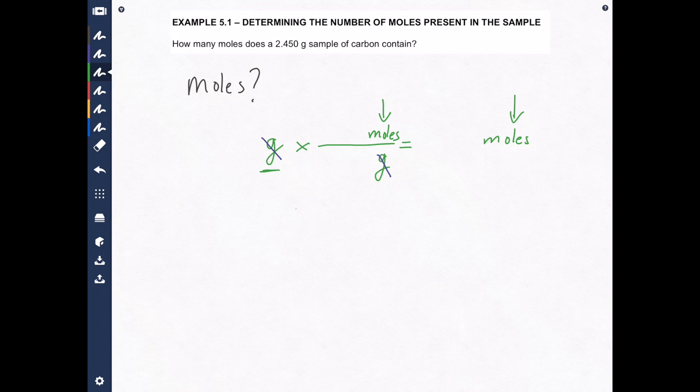Now the question always is, what numbers go here and what numbers go here and up here. Those are always the questions people want to know. Well I always say, let the units tell you what to do. Don't worry about anything else but units. They will always guide you in the right direction. First things first, the number that goes out here is the number we start with, 2.450, which comes of course from the question. That's what we're starting with. The number that goes up here is molar mass or atomic mass, I guess, because we're dealing with an element.